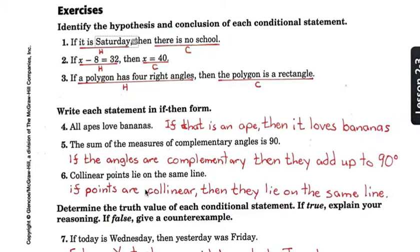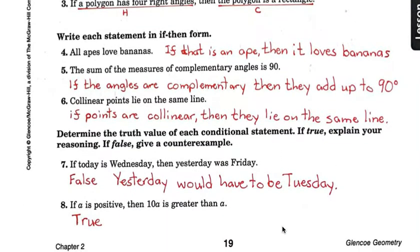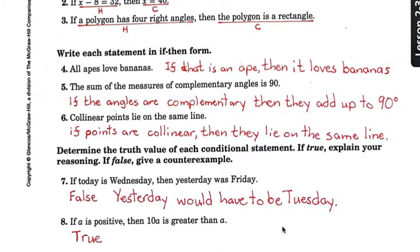Collinear points lie on the same line. If points are collinear, then they lie on the same line. Determine the truth value. Truth value is true or false.